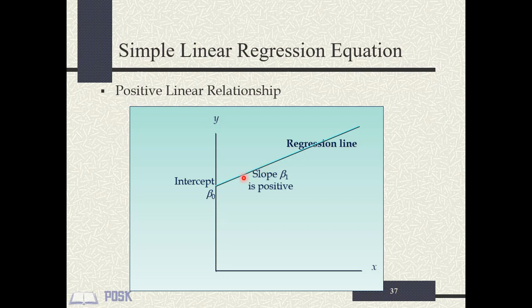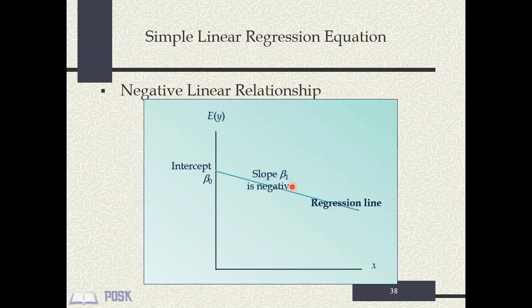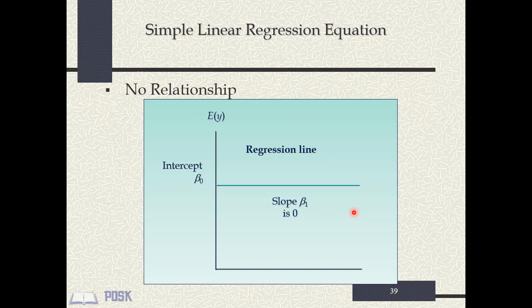The slope represents beta 1. When the slope is positive, both the dependent and independent variables are increasing together. On the other hand, a negative regression slope means the outcome variable goes up when the predictor variable goes down, and vice versa. A flat slope indicates no relationship between the independent and dependent variables.